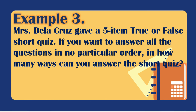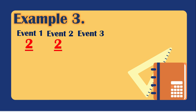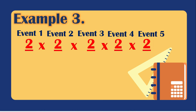Example number three: Mrs. De La Cruz gave a five-item true-or-false short quiz. In how many ways can you answer the short quiz? Each item has two possible answers: true or false. So we have five events, each with two possible options. Using the Fundamental Counting Principle, we multiply: 2 × 2 × 2 × 2 × 2 = 32 total possible outcomes. That is the easier way to solve for the total possible outcomes or the number of occurrences.